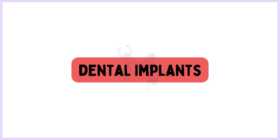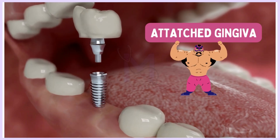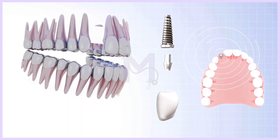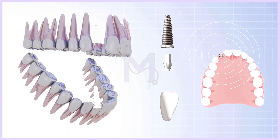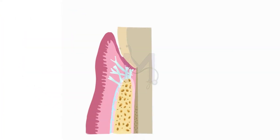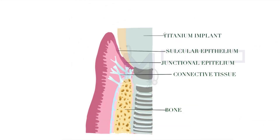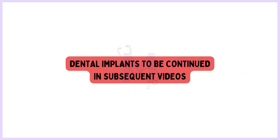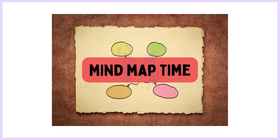Dental implants have become a routine procedure in dental practice. The attached gingiva is needed for sound periodontal health even in the case of implants. Similar to the supracrestal attached tissues in the natural dentition, implants also present in their most coronal portion with sulcular epithelium, junctional epithelium and connective tissue. We will study the other similarities and differences in subsequent videos as we study the normal structure of the periodontium.